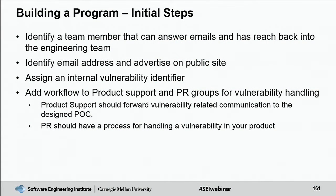As you develop this communication capability, first identify a team member who can answer emails and importantly has reach back into engineering — you don't want a low-level marketing person who can't get engineering's attention. Identify and advertise an email address. You'll probably want to assign an internal vulnerability identifier; some companies use a separate tracking system just for vulnerabilities, others incorporate them directly into their bug tracker. One concern with a bug tracker is that security vulnerabilities known to third parties may not get sufficient attention from developers.